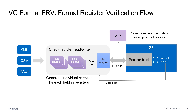This is a diagram of the VC Formal FRV flow. Users provide the register specification in IPExact XML, RALF, and CSV format. Assertion IPs can also be used to constrain the bus interface. Users can either use Synopsys AIPs or use their proprietary ones. These AIPs help to constrain the bus interface and reduce false failures. Currently, VC Formal FRV supports APB, AHB, AXI, and generic bus drivers.